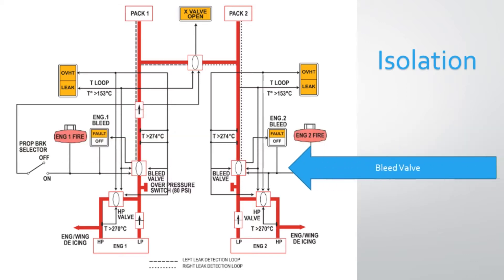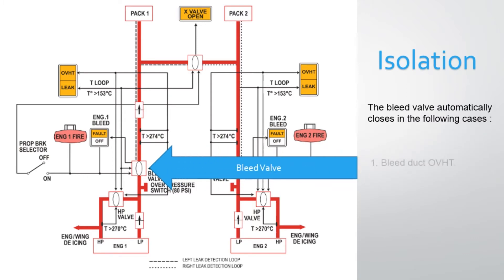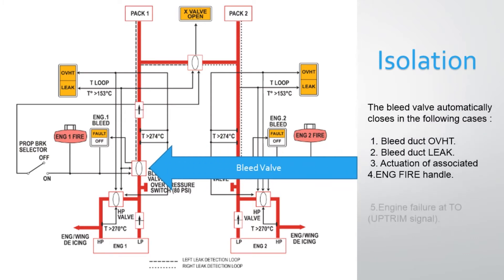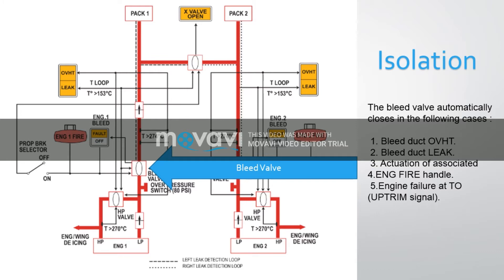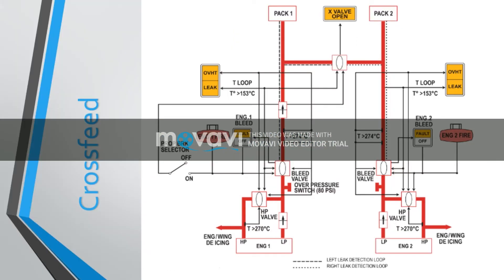It includes a single solenoid which locks the valve closed when de-energized. The bleed valve automatically closes in the following cases: bleed duct overheat, bleed duct leak, actuation of the associated engine fire handle, engine failure to uptrim signal, and cross-feed.